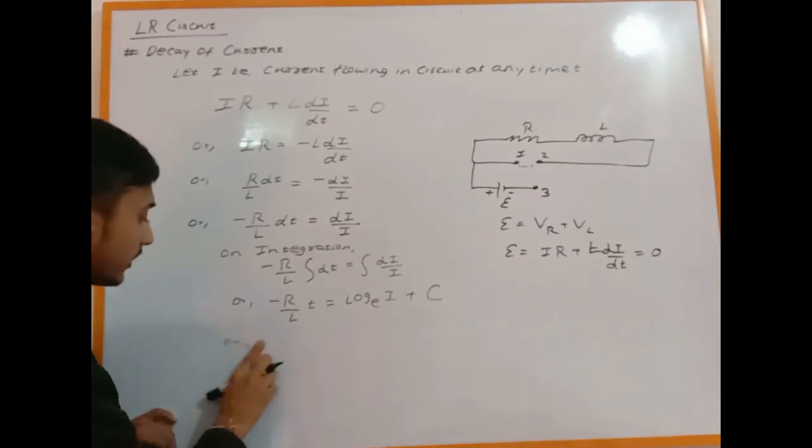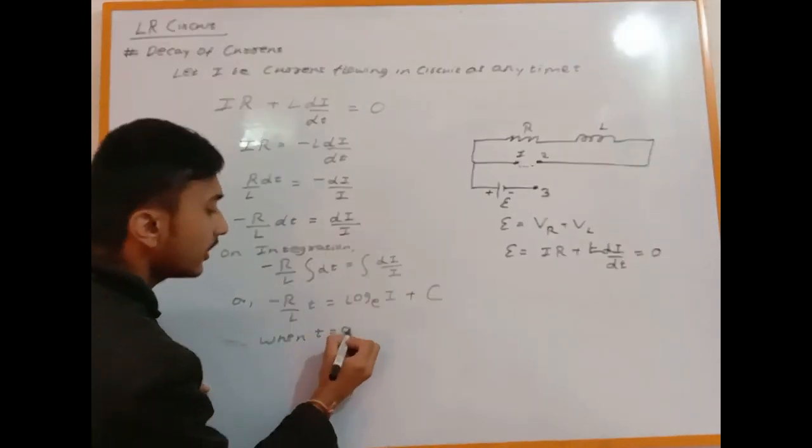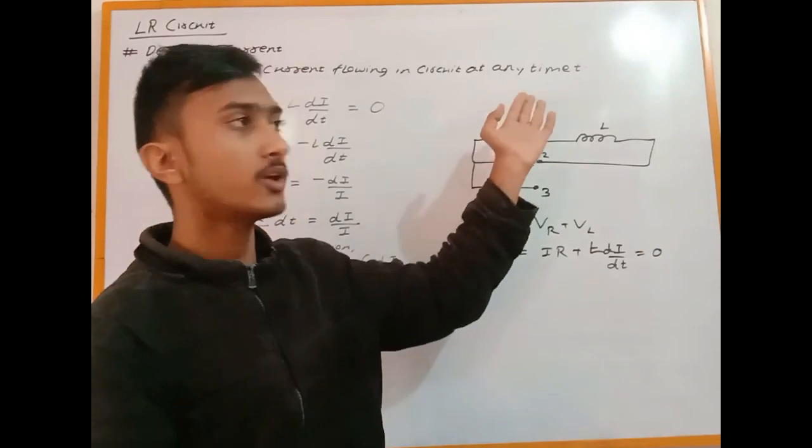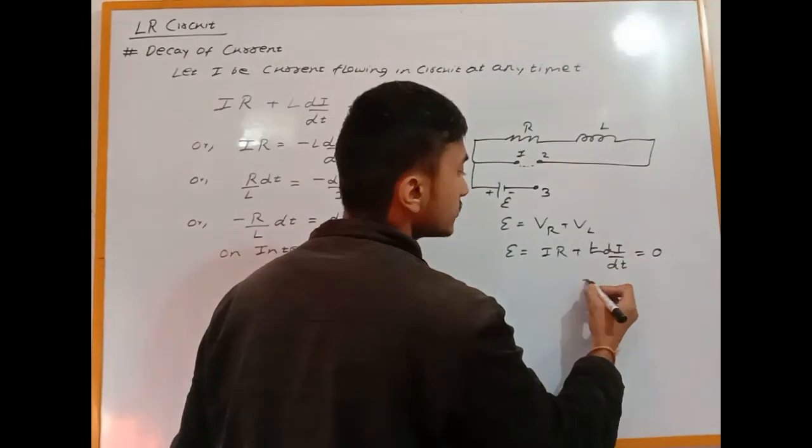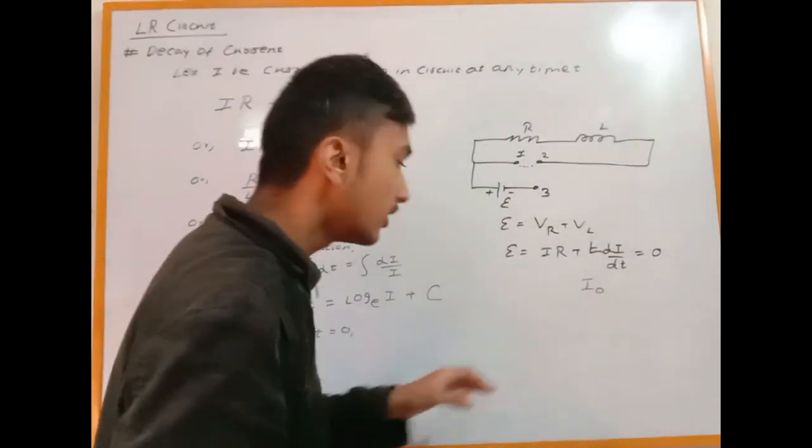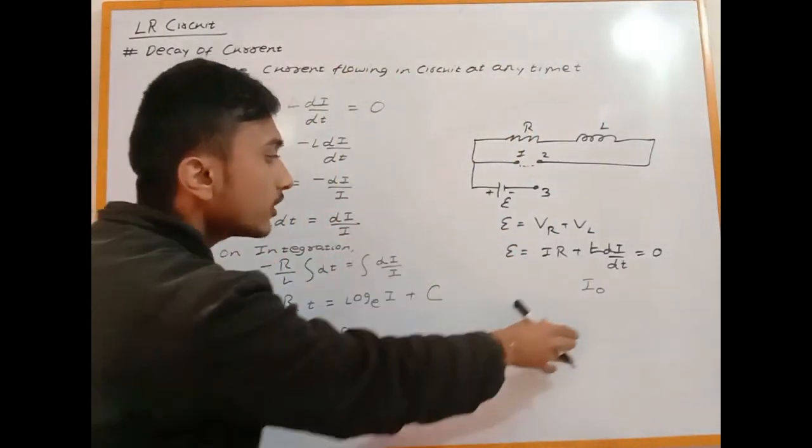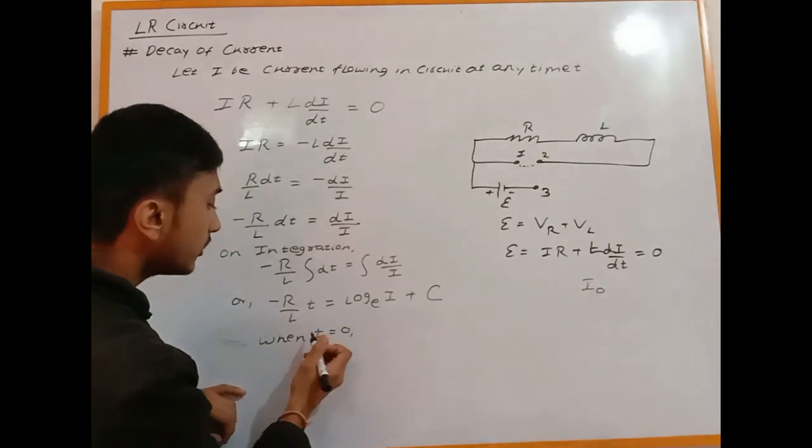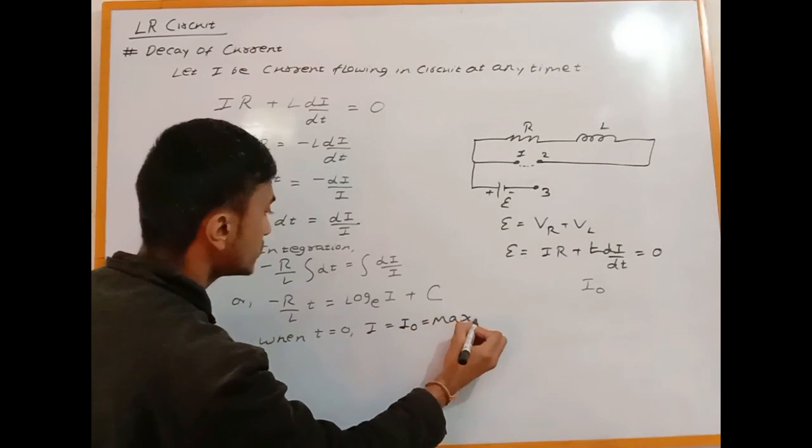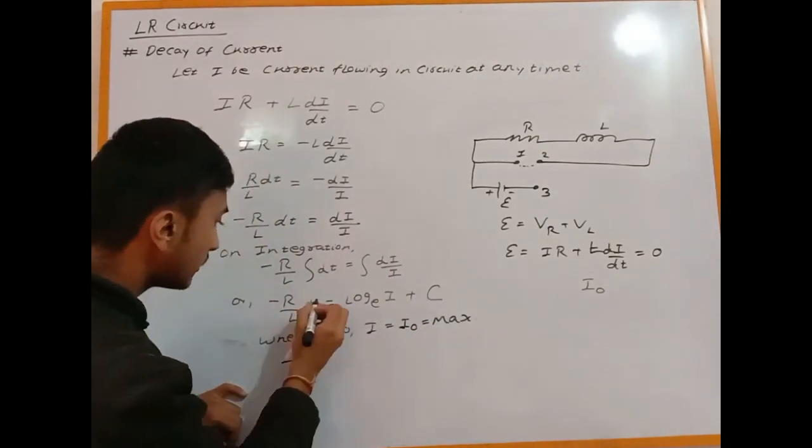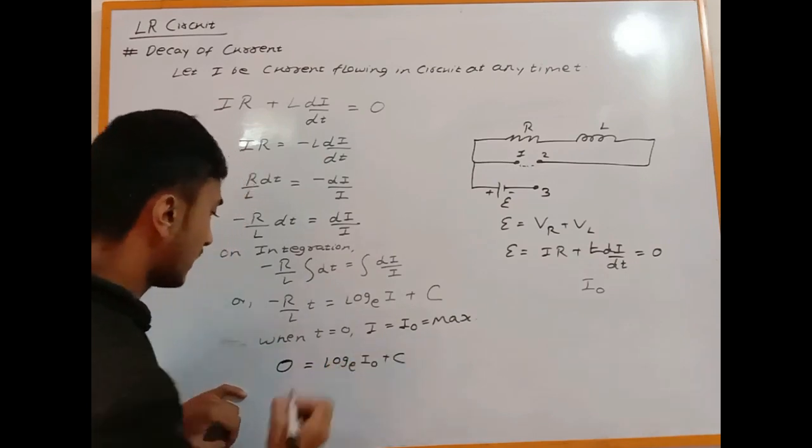Now I'll apply initial conditions. At time t=0, the current is at maximum. The maximum current from the last video was I₀ = E/R. So at t=0, I = I₀. Substituting: 0 = ln(I₀) + C.